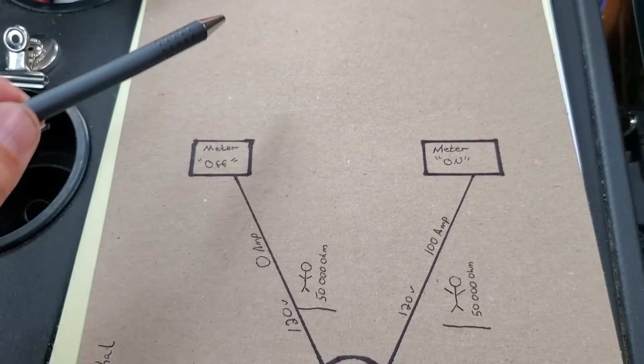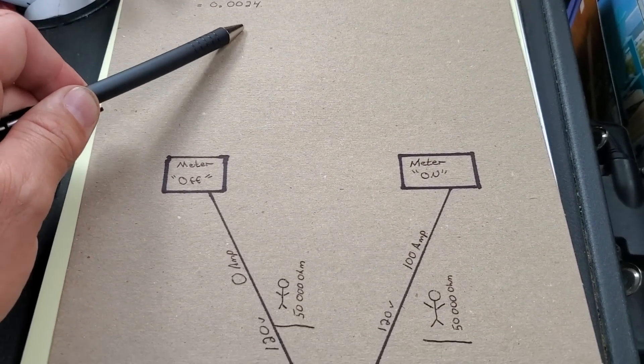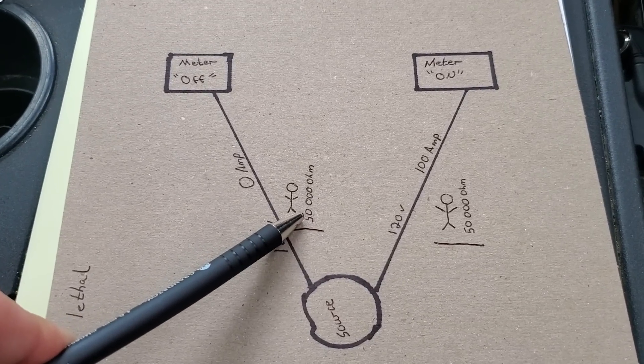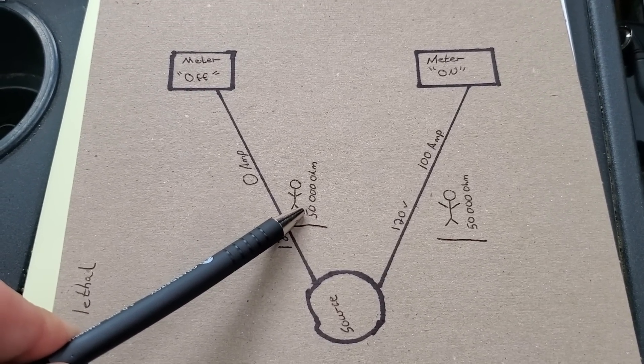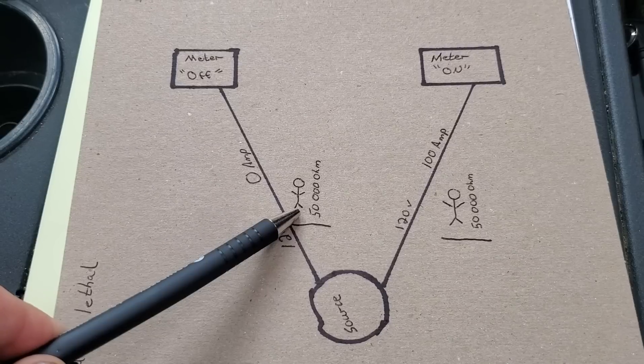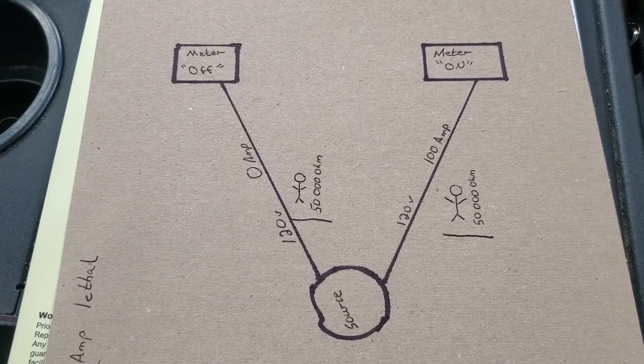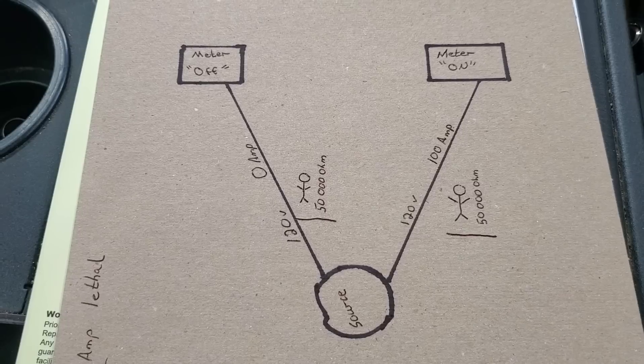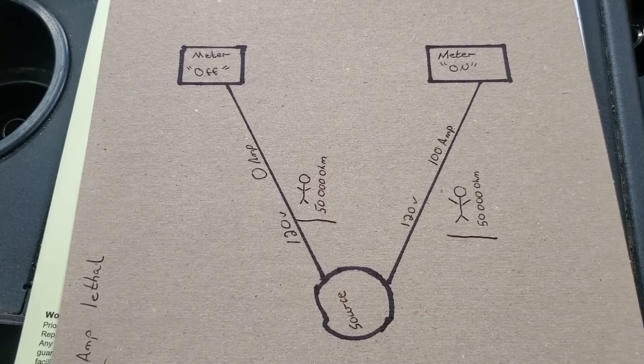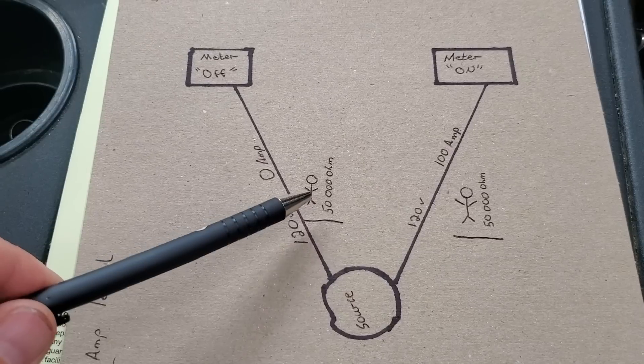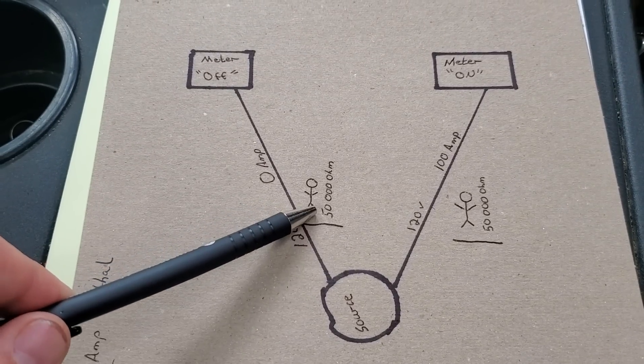However it's quite likely that that resistance is going to be much much lower, especially if your skin is moist at all, or like I said if the path is say between your right shoulder and your right arm then the current is going to travel just through that arm and the resistance is going to be much much lower. It'll be quite a bit more painful of a shock than the 50,000 ohms resistance.